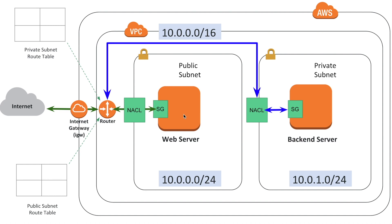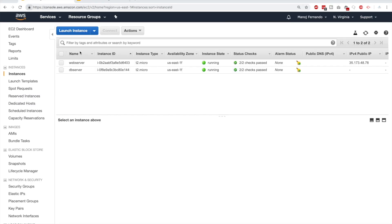Once inside the web server, we could not SSH into the backend server. The error indicated that the web server did not have the youtube.pem private key that was generated during the launch of the two servers. That's correct — the PEM file was available on the local machine but was never moved into the web server. Let me quickly show you that.